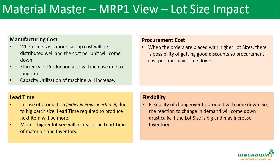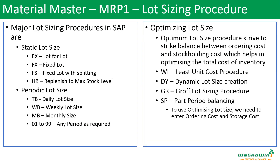In SAP there are two kinds of lot sizes: static lot size and periodic lot size. In static lot sizes we have lot-for-lot, fixed lot size, fixed lot size with splitting, and replenishment to maximum stock level. For periodic lot sizes we have daily, weekly, or monthly lot sizes. There are also optimizing lot sizes, which consider cost — what is the least cost, dynamic lot sizes — but optimizing lot sizes are more cost-oriented. For most purposes, using static and periodic lot sizes properly is good enough for the organization.